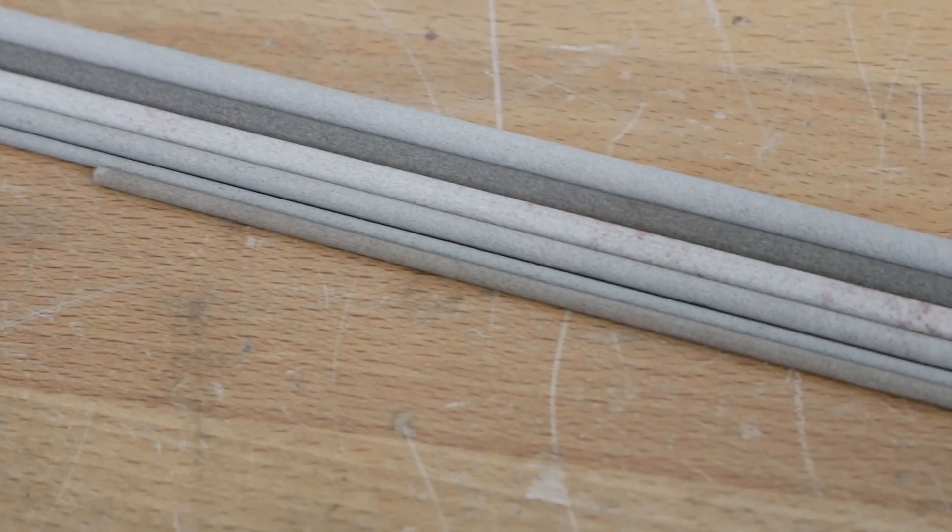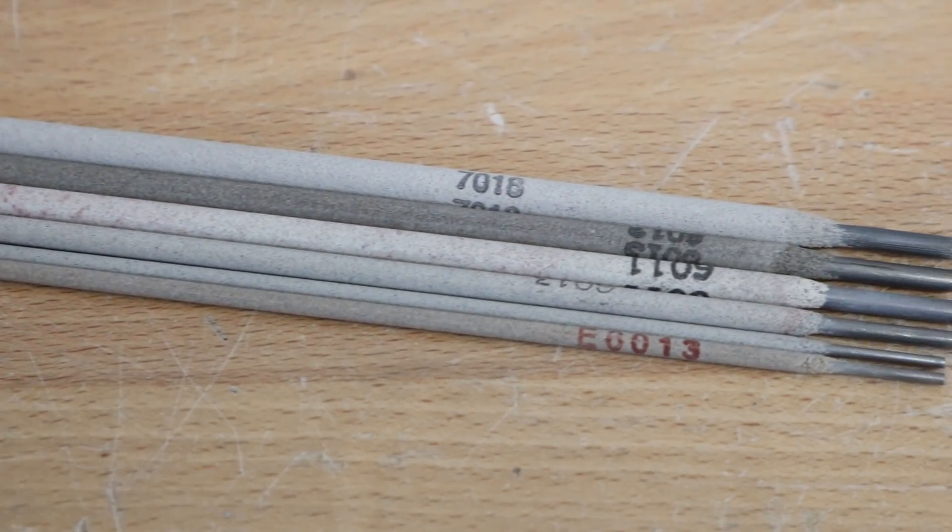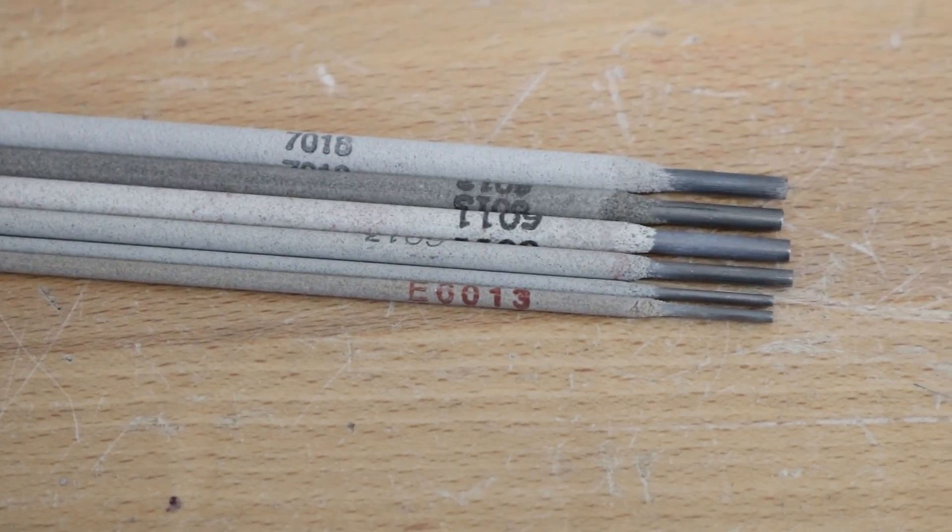Let's talk a little bit about what the numbering scheme means on the electrodes. Each electrode is named with a four-digit number, and the first two digits designate how strong the weld metal is in thousands of pounds per square inch. If you have a weld filler that starts with the number 60, then if you had a one inch by one inch square of that metal that you put down with it, you can pull on it with 60,000 pounds, so 60,000 PSI. 70 would be 70,000 PSI.